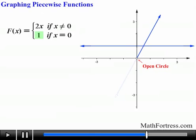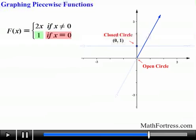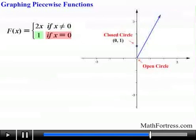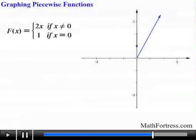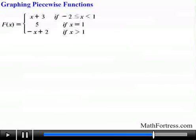According to the restriction x = 0, this constant function is only defined at that x value, so we're only interested in the point (0, 1). We erase everything except that point. It's perfectly normal for piecewise defined functions to have gaps and then a closed circle above or below the gap. This function still passes the vertical line test, so it is still considered a function.